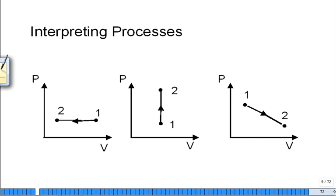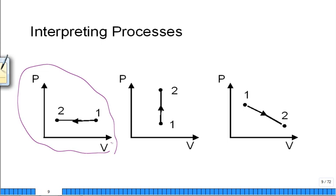We can interpret processes. Let's take a look at this one. There's the PV diagram. Tell me about how the volume changes. It's decreasing. We would call that compression. Tell me about how the pressure changes. It's constant pressure compression. You think that's kind of ridiculous. How can you ever have that in practice? Cool it off. Take some heat out while you're compressing.